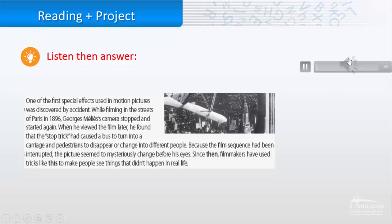One of the first special effects used in motion pictures was discovered by accident. While filming in the streets of Paris in 1896, Georges Méliès' camera stopped and started again. When he viewed the film later, he found that the stop trick had caused a bus to turn into a carriage and pedestrians to disappear or change into different people. Because the film sequence had been interrupted, the picture seemed to mysteriously change before his eyes. Since then, filmmakers have used tricks like this to make people see things that didn't happen in real life.